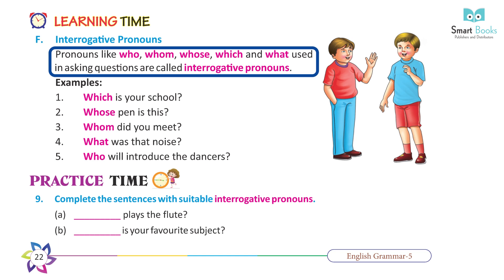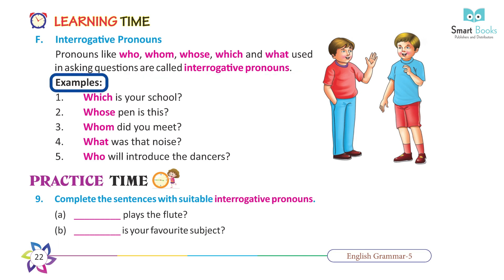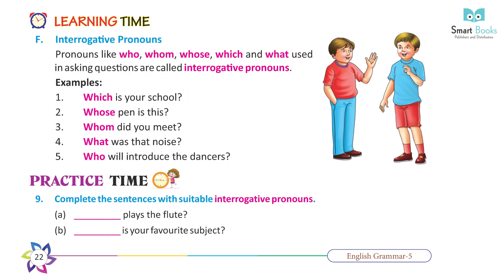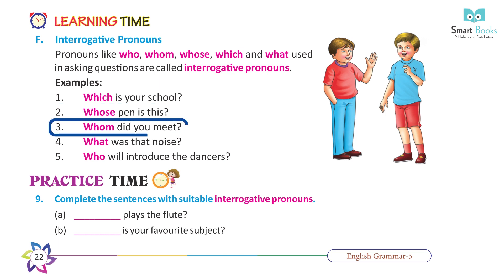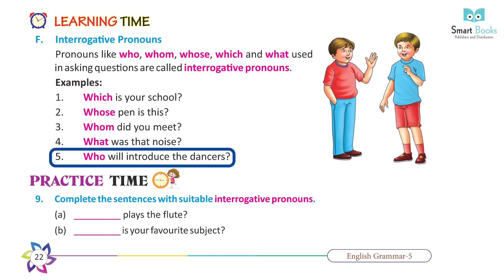Learning time — interrogative pronouns. Pronouns like who, whom, whose, which, and what, used in asking questions, are called interrogative pronouns. Examples: 1 — which is your skill? 2 — whose pen is this? 3 — whom did you meet? 4 — what was that noise? 5 — who will introduce the dancers?